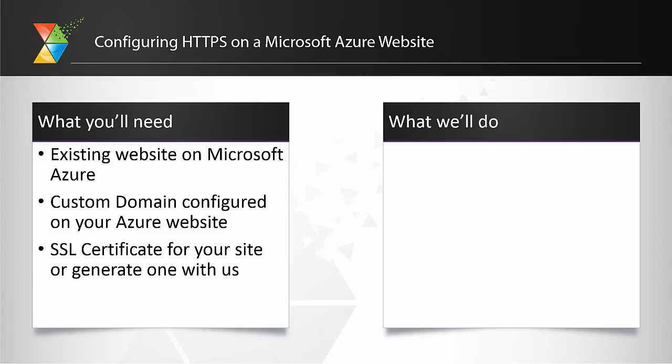And finally, your SSL certificate — this is what we're going to upload to the site in order to have it use that SSL certificate. If you don't have one from a certificate authority, we're going to walk you through how to create a self-signed one that's free, which we can upload and use for testing on Azure.